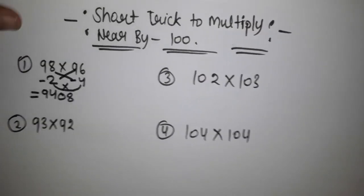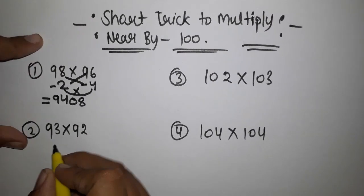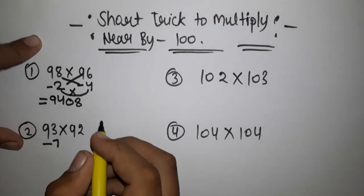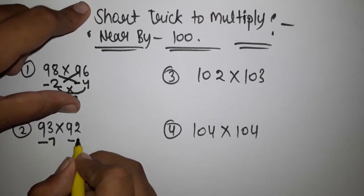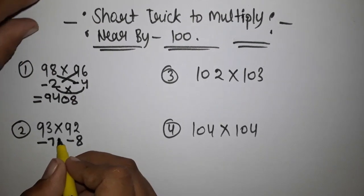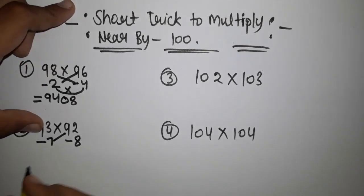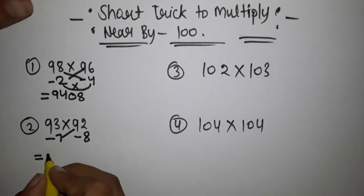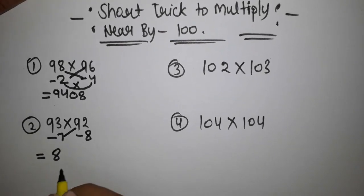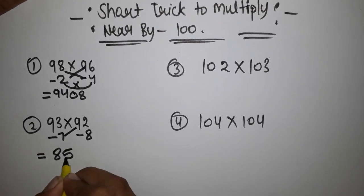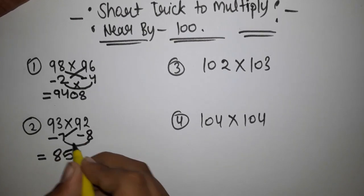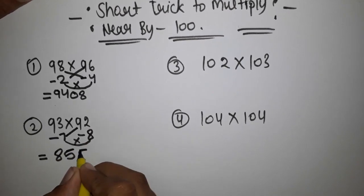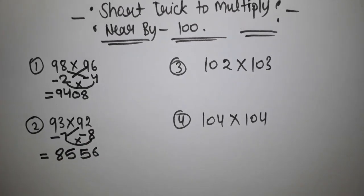Let's see another example. 93 multiply 92. This is minus 7 from 100 and this is minus 8 from 100. So 92 minus 7, that is 85. And then we have to multiply 7 to 8, which is 56. This is our answer.